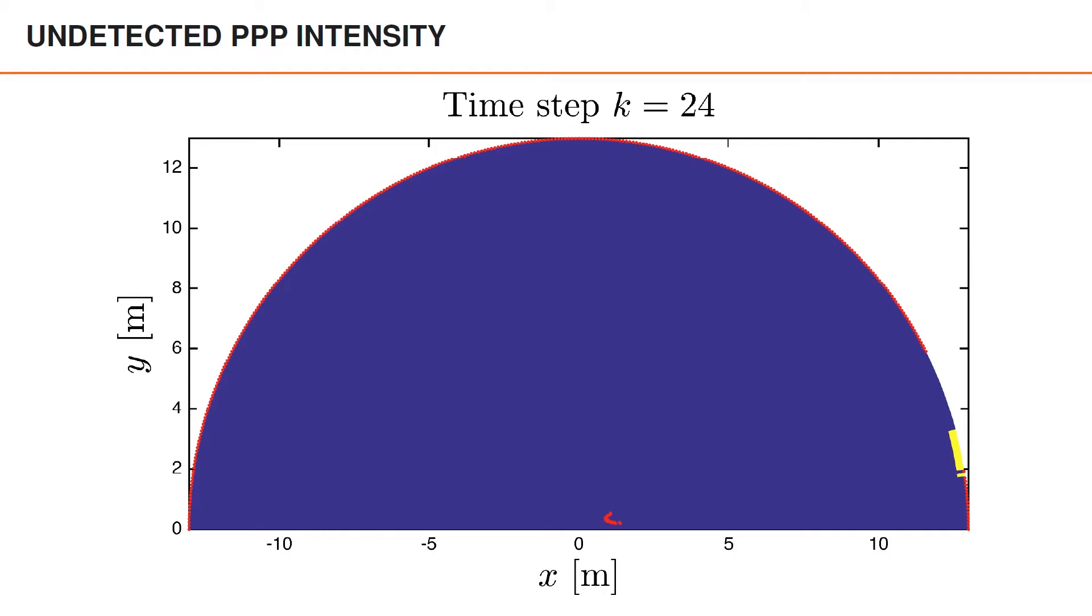Let's also have a look at the undetected intensity for the same data. As long as the pedestrians are moving, no area is occluded long enough for there to be any significant probability of undetected objects. However, as soon as the pedestrian stands still, we can see how the undetected intensity behind them increases until it reaches a stationary value. So even though this is a fairly small example, we hope that it illustrates that it can be quite useful to have an explicit model for undetected objects like the PMBM filter does.